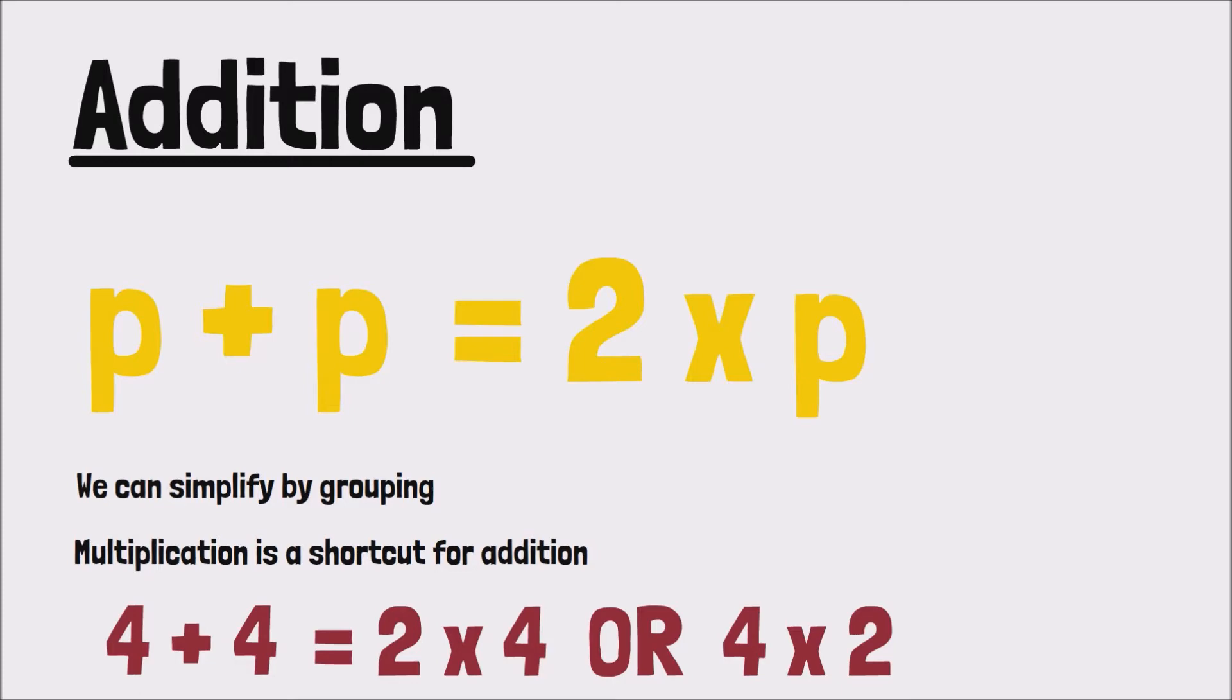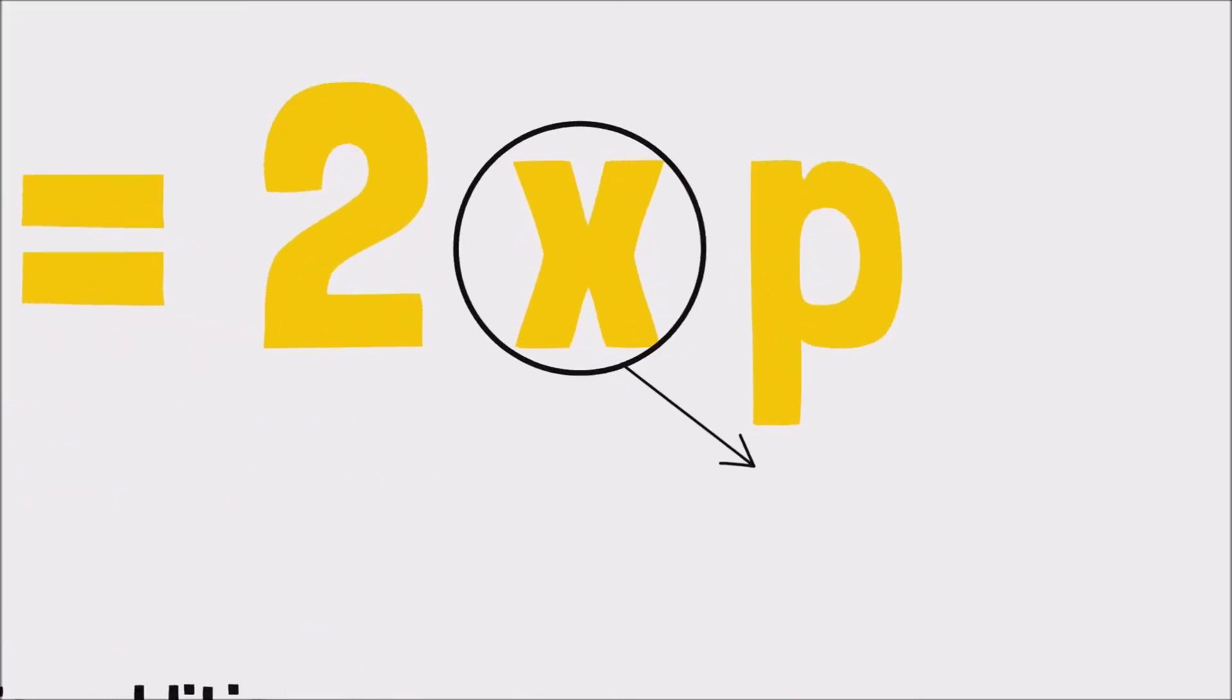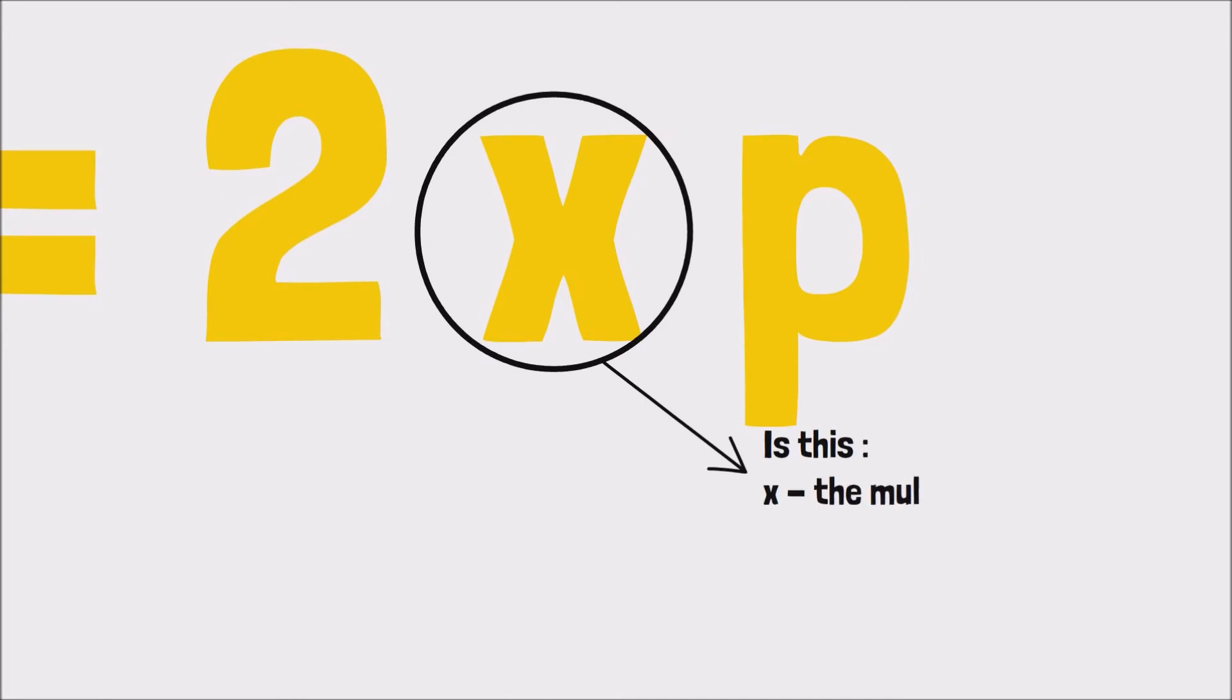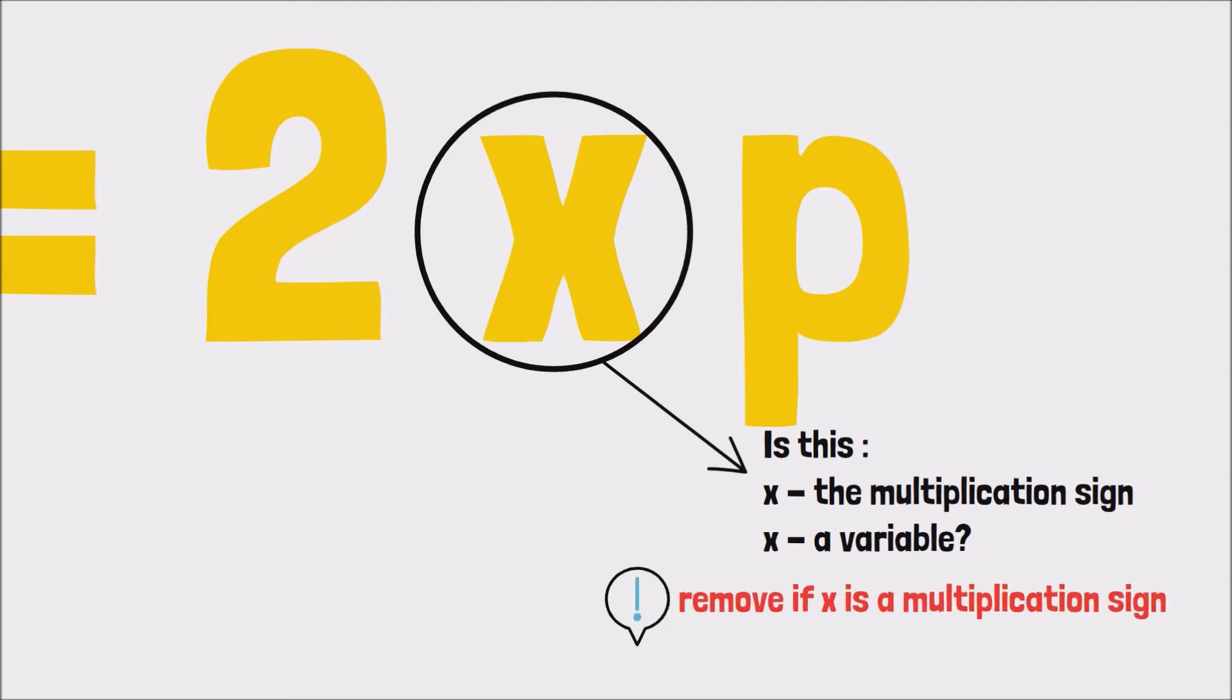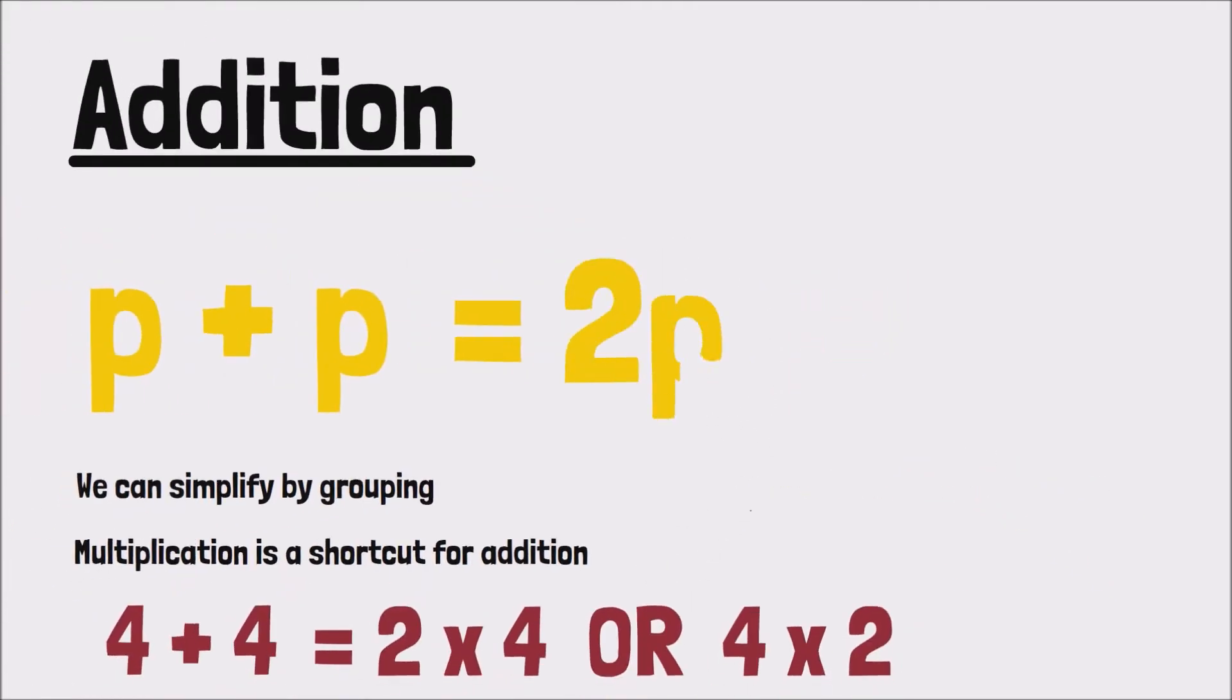With algebraic expressions, we tend not to include the multiplication sign. The x as in the multiplication sign looks a lot like x that you would use as an unknown variable, so to avoid confusion we just totally omit the multiplication sign. And instead we would write it as 2P.